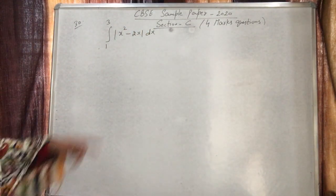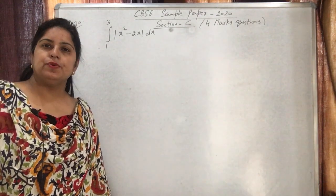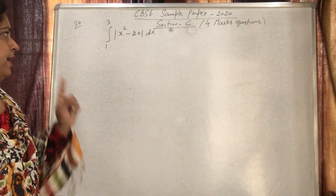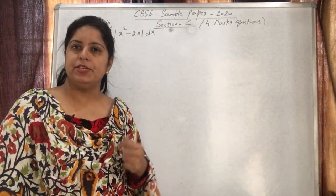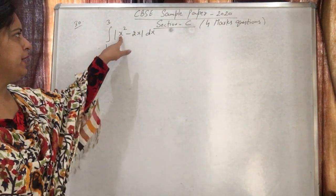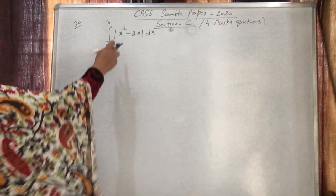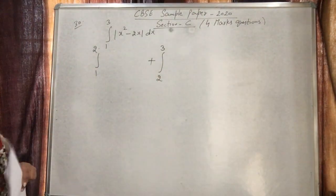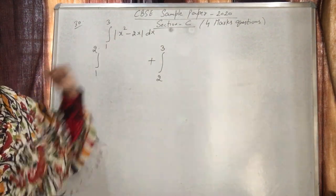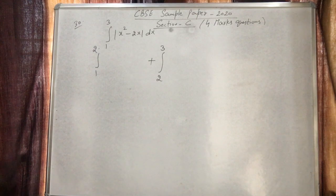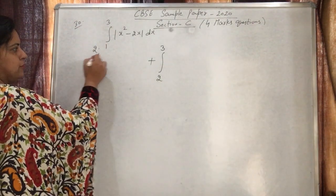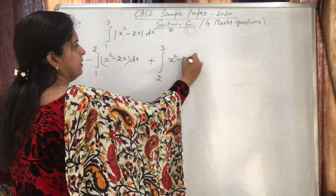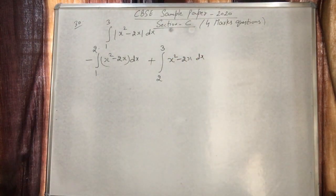We find where x²-2x = 0, that is x(x-2) = 0, so x = 0 or x = 2. Since x = 2 lies between 1 and 3, we break the integral there. For x in [1,2], checking x = 1.5 shows the function is negative, so we put a minus sign. For x in [2,3], the function is positive.